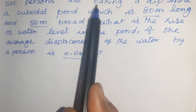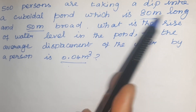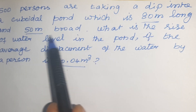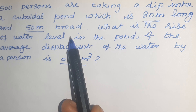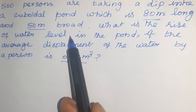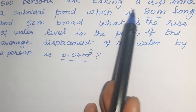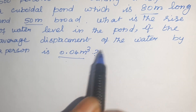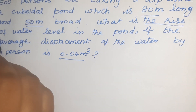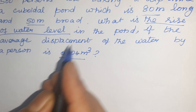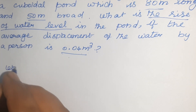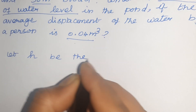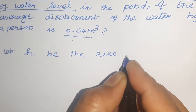500 persons are taking a dip into a cuboidal pond which is 80 meter long and 50 meter broad. What is the rise of water level? Let H be the rise of water level.